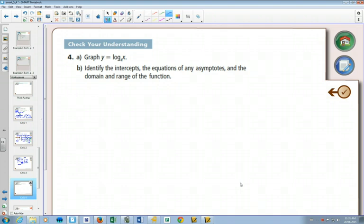y equals log base 4 of x. Ask yourself, first let's go to our exponential ones with that same base. How would you graph y equals 4 to the x? What were the two points we always included?